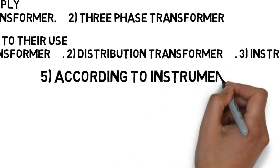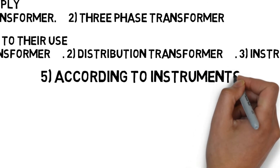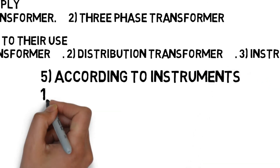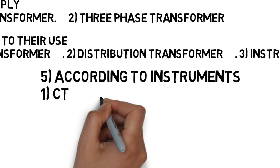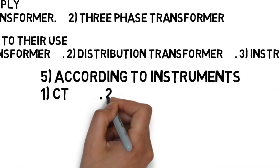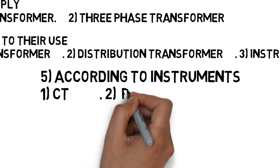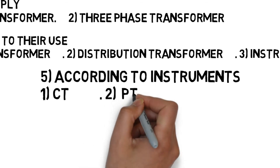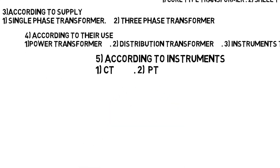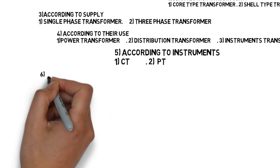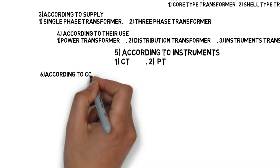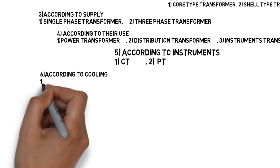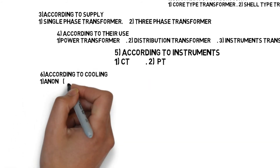The fifth category is instrument transformers. According to instrument transformers, we have two types of transformers: the first one is CT (current transformer) and the second one is PT (potential transformer).